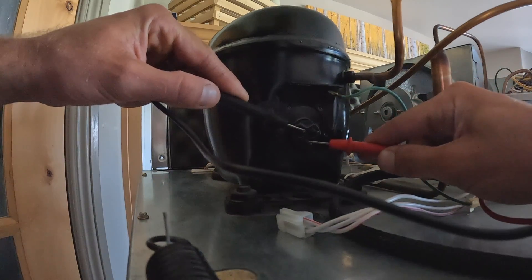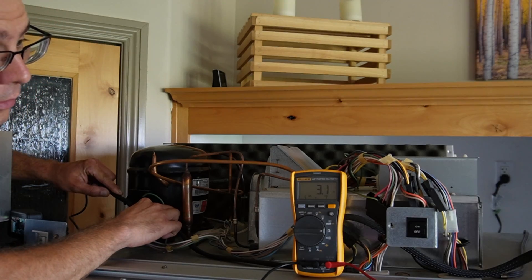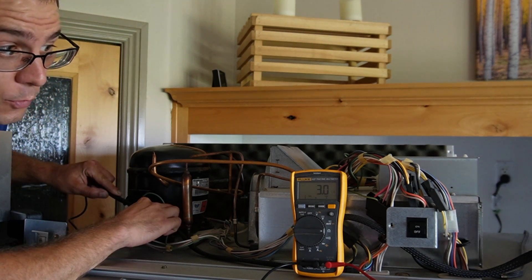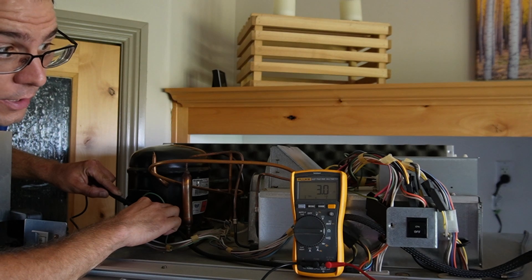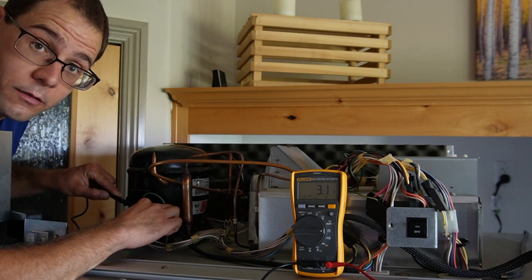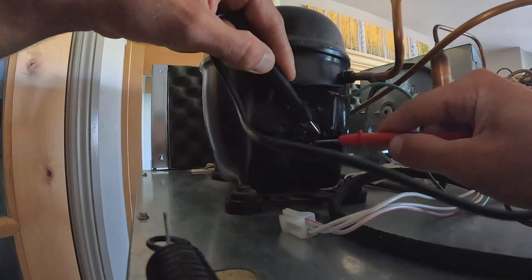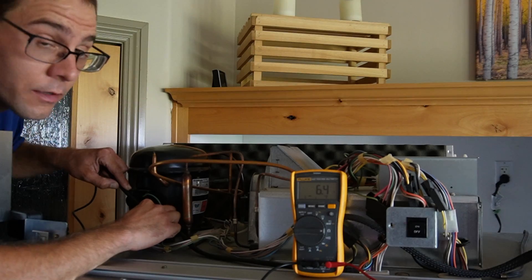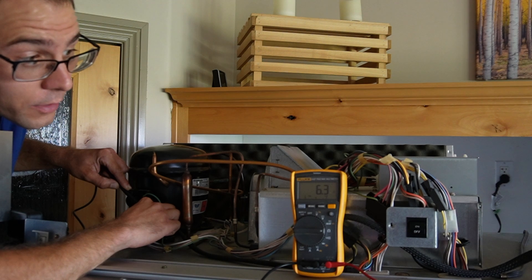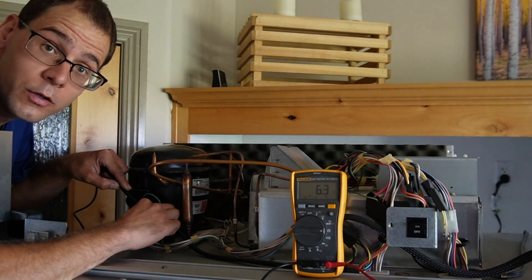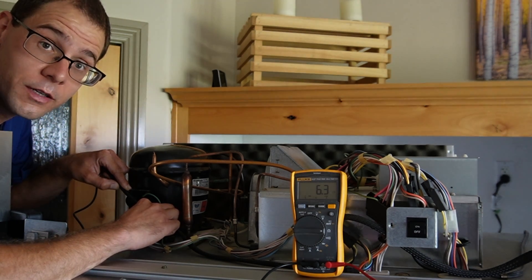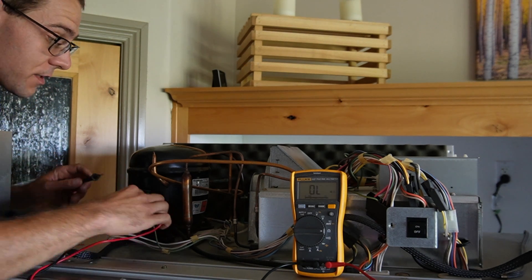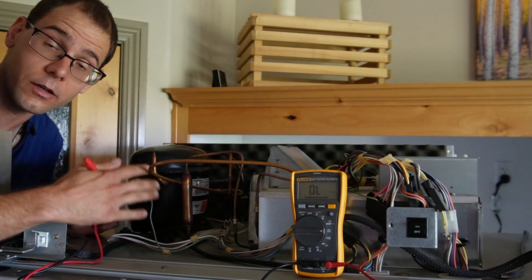On the left side we're getting a value of about 3.1, which is very close to the 2.9 we're looking for. This must be the run winding. So the right side should be higher, and it is. We're getting a value of about 6.3, which is close to the 5.9 that we want. So it looks like this is the start winding. That's very good news because it means the windings in this compressor are likely good.